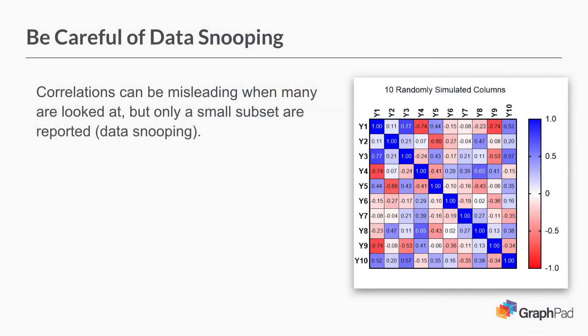Here I've got 10 randomly simulated columns. This is the Prism correlation matrix again, and dark blue means there's a strong positive correlation. I have a 0.77 correlation, which is very strong, close to one. I also have a negative 0.74, also very strong in the negative direction. I didn't simulate until I got this — this is just one first simulation, with 10 columns of data and a sample size of 10 in each.